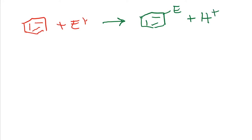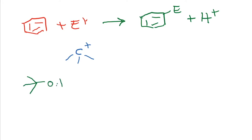The electrophile can actually be a variety of compounds. For example, one of the most important reactions that organic chemists are interested in is the formation of a carbon-carbon bond. So, how do we generate a carbon-based electrophile? Carbon-based electrophiles can be produced as intermediates during SN1 reactions.